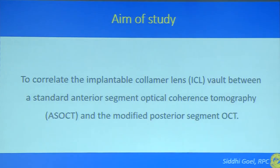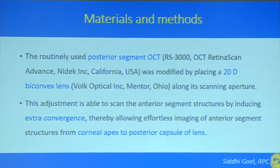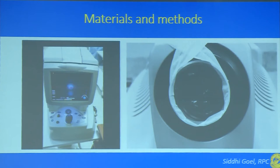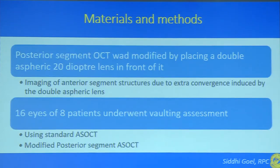The aim of the study was to correlate ICL vault between standard anterior segment OCT and a modified posterior segment OCT. The posterior segment OCT was modified by placing a 20-diopter biconvex lens along its scanning aperture, which induces extra convergence to allow imaging of anterior segment structures from the corneal apex to the posterior capsule of the lens. The 20-diopter lens was secured to the scanning aperture using micropore tape.